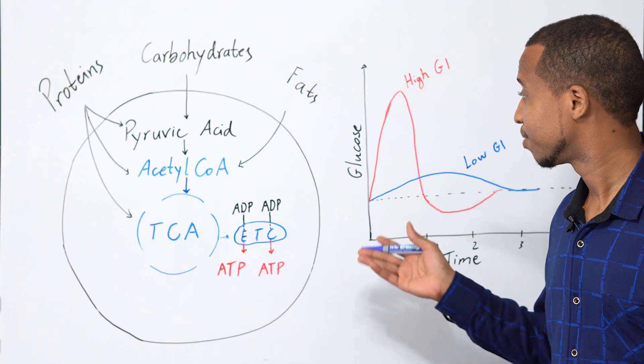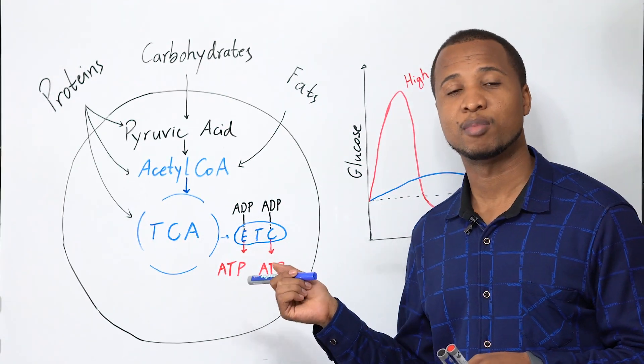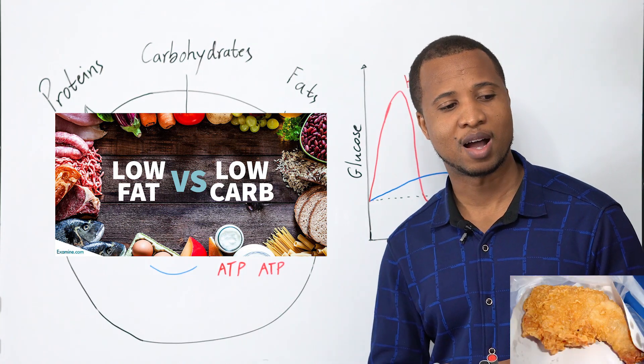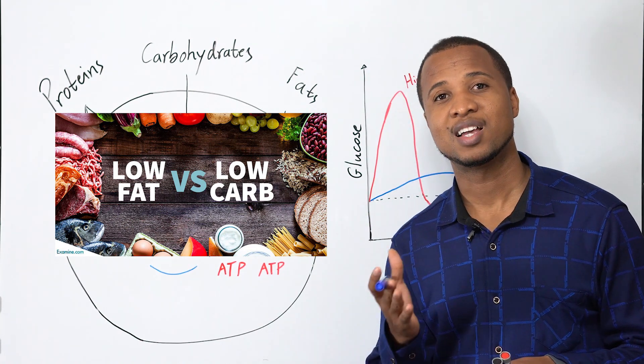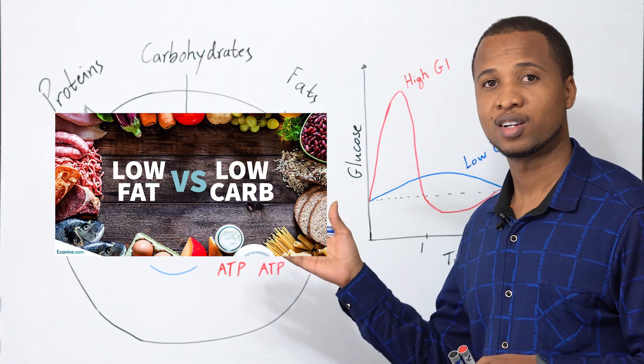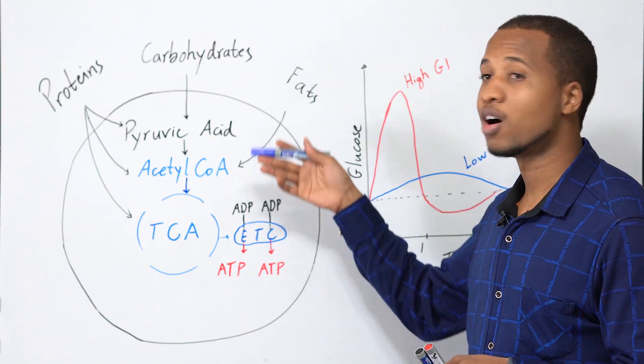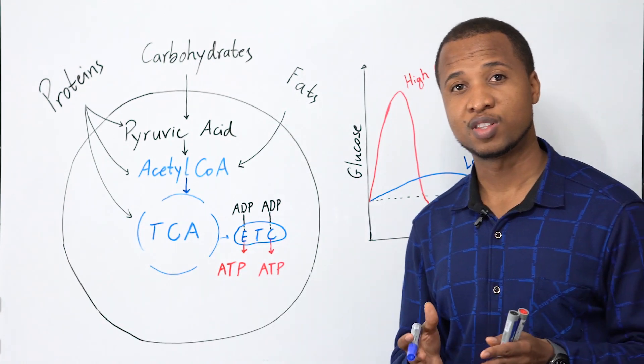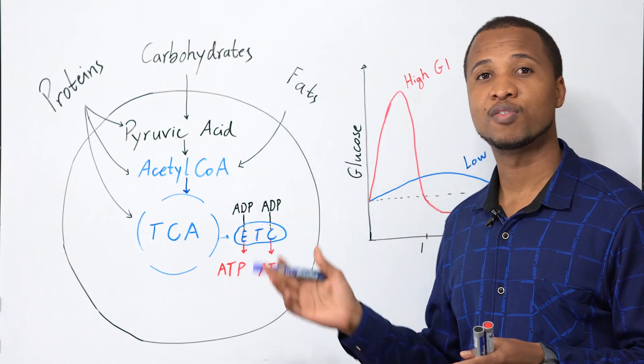The cells in your body do not care about how your food looks like. For example, you might be looking at that piece of chicken and you go like wow, but the cells in your body do not care. You might have a lot of protein, a lot of carbs, a lot of fat - they don't care. At the end of the day, for the cells to use them they need to be converted to energy.